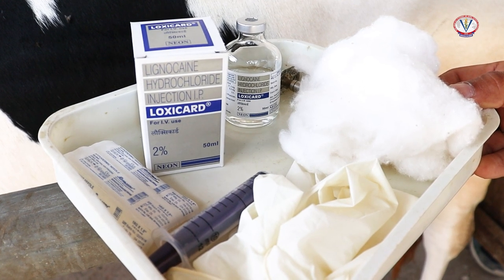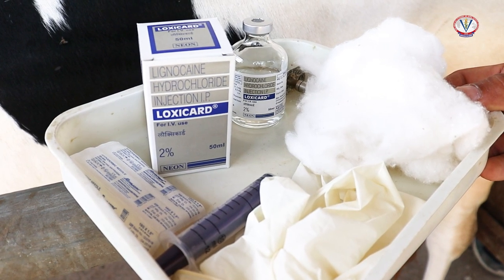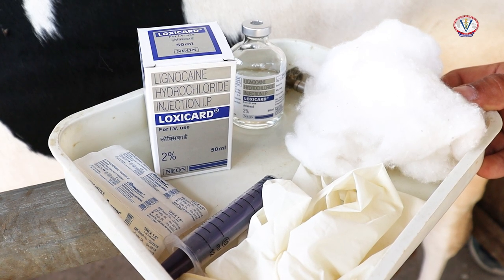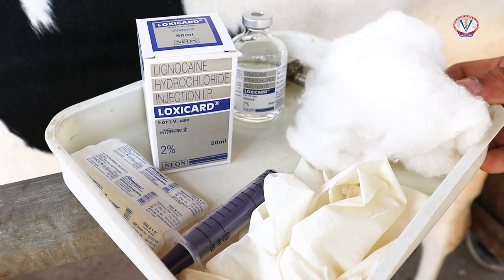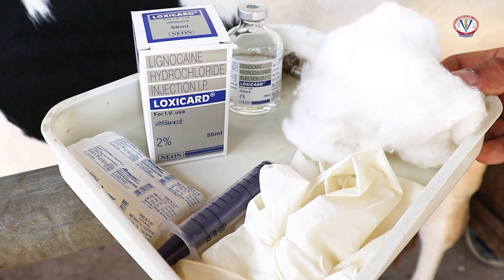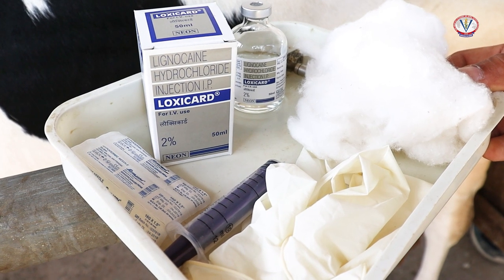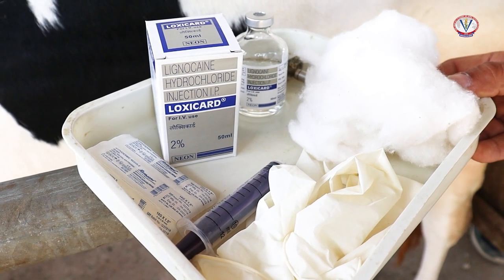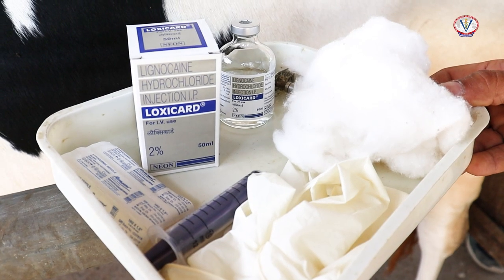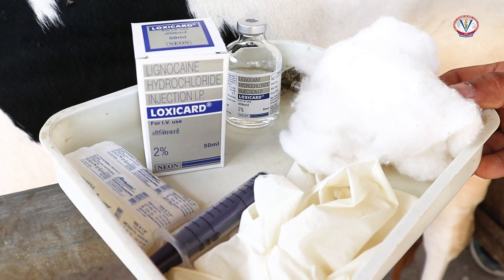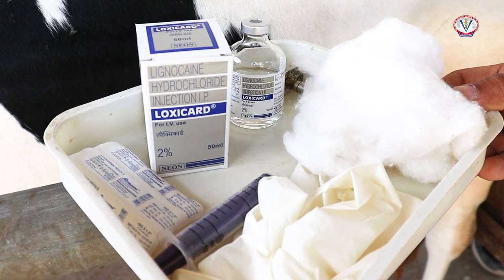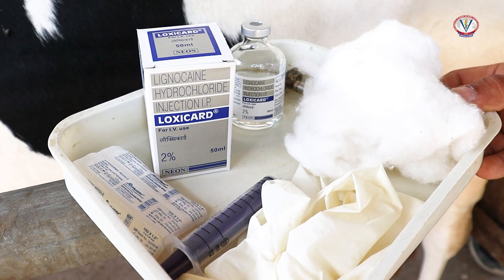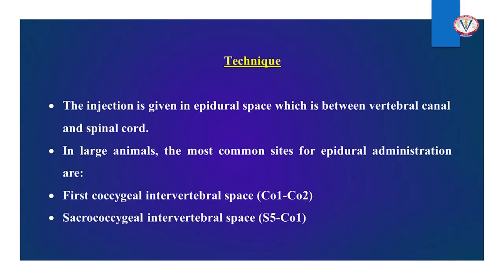For epidural anesthesia, the required materials include a local anesthetic drug, razor, needle, disposable syringe, cotton, gloves, antiseptic solution, and alcohol or spirit. Lignocaine hydrochloride 2% solution is the most commonly used drug, with an average dose of 6 to 10 ml, that is 0.22 to 0.5 mg per kg body weight. Its effect lasts for about 90 minutes.